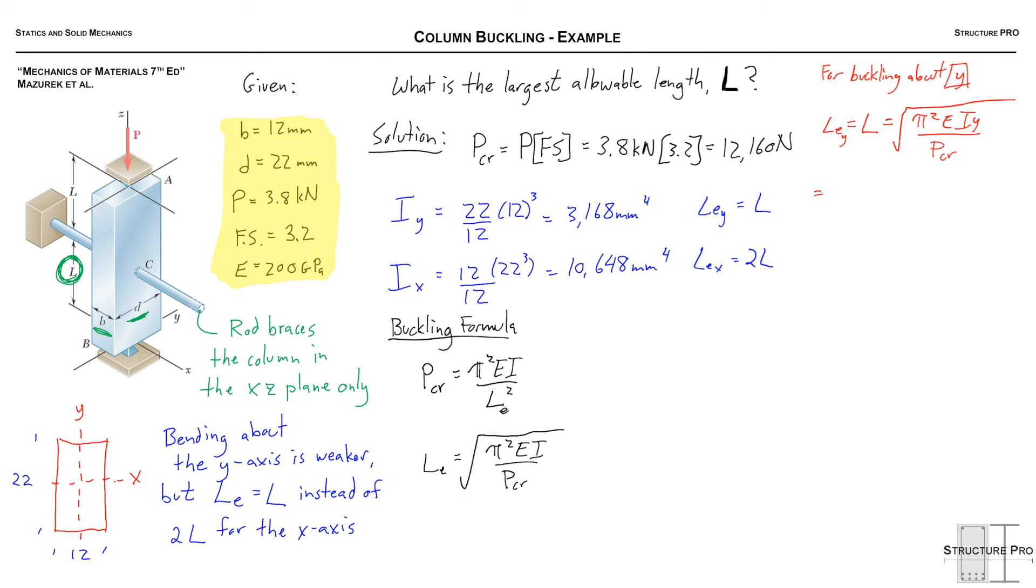So L effective Y equals L and here's our equation so now we can just plug stuff in, we have everything we need. Square root of pi squared times 200,000 times 3,168 all divided by the P critical and we're using Newtons millimeters and MPa.